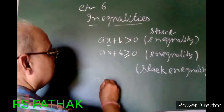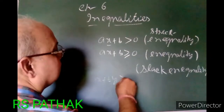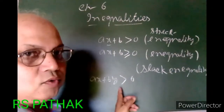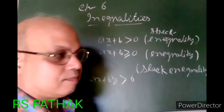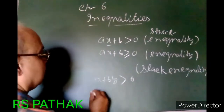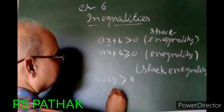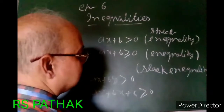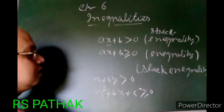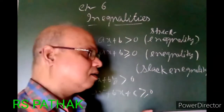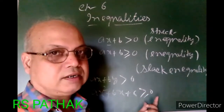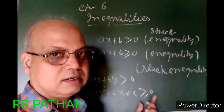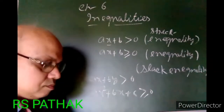If ax plus by is greater than zero, this is called an inequality in two variables, because there are two variables: x and y. If ax squared plus bx plus c is greater than or equal to zero, this is called a quadratic inequality.